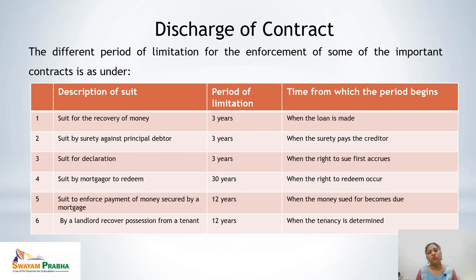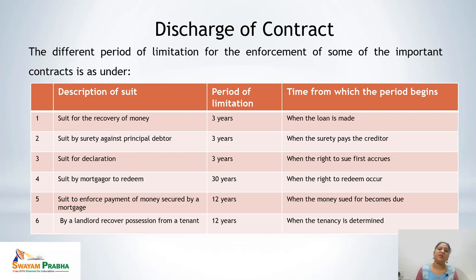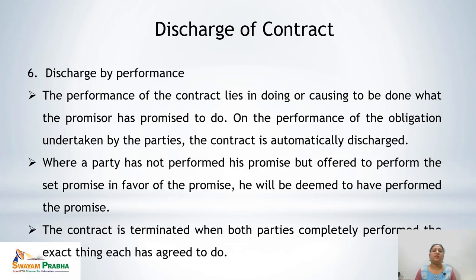For example, if A took property on rent from B on 1st January 2005, the 12-year period covers up to 1st January 2017. If the landlord recovers the property within this 12-year period, the tenancy rights exist and the case can be sued. But if the 12-year period is over, that right is no longer available to the landlord.